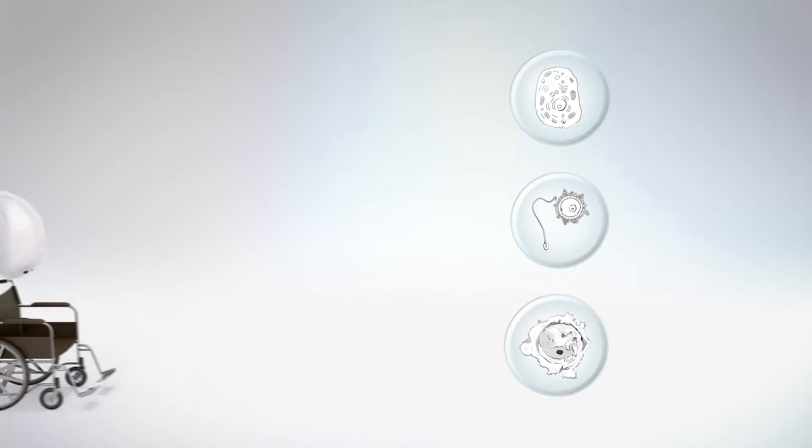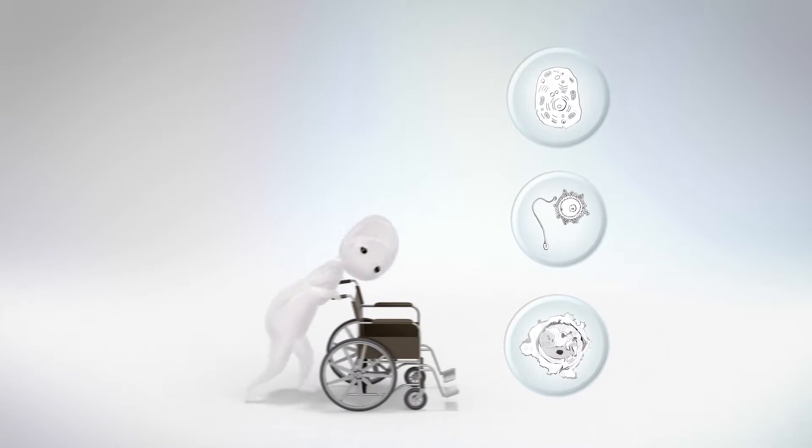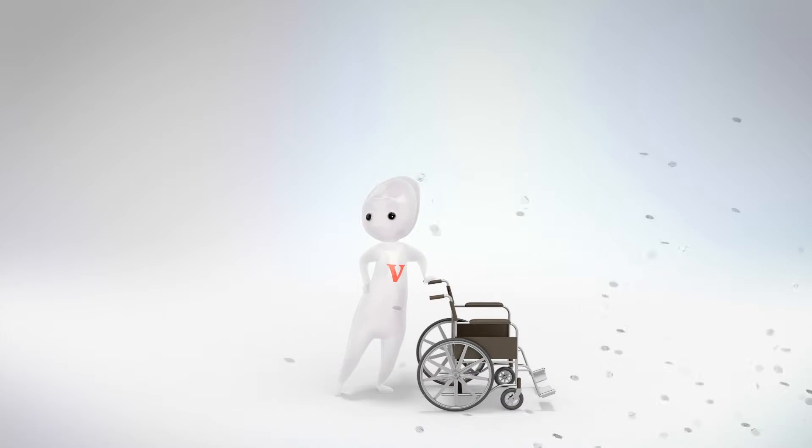Une variation négative perturbe des fonctions dans la cellule et entraîne une maladie génétique. Le caractère généralement rare des variations négatives explique pourquoi la plupart des maladies génétiques sont rares. Le grand nombre de gènes dans le génome, 20 000, explique pourquoi ces maladies se comptent par milliers.